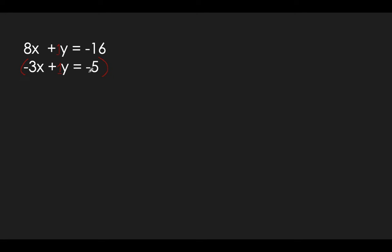Let's multiply the bottom equation — whichever way would work — times everything by negative 1. Negative 3 times negative 1 becomes positive 3x. Positive 1 times negative 1 is negative 1y. Negative 5 times negative 1 gives positive 5. So this is our new equation 2. Bring down the old equation: plus 1y equals negative 16. Now our y's cancel because they're opposites — positive 1 and negative 1. Adding: 8x plus 3x is 11x. Negative 16 plus 5 is negative 11. Divide by 11: x equals negative 1.